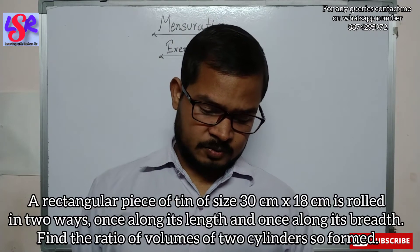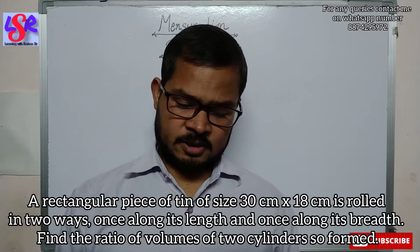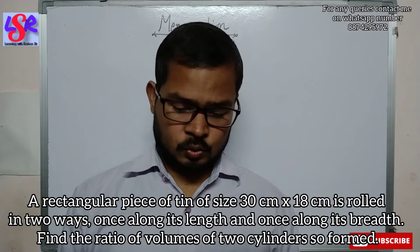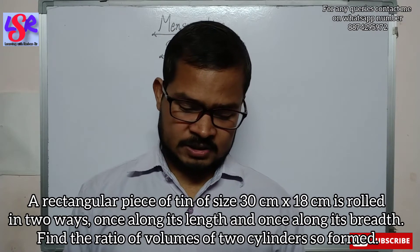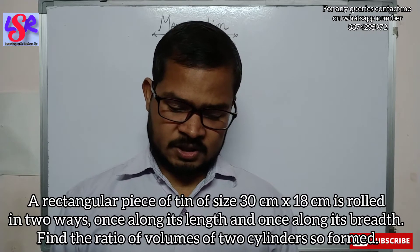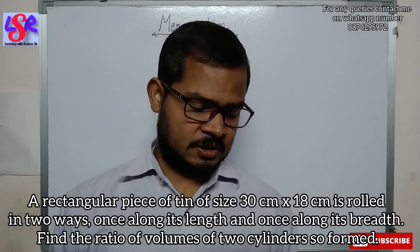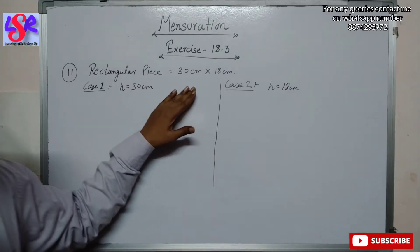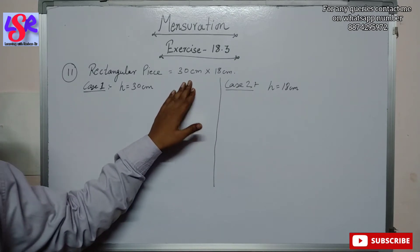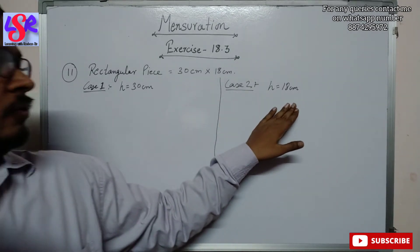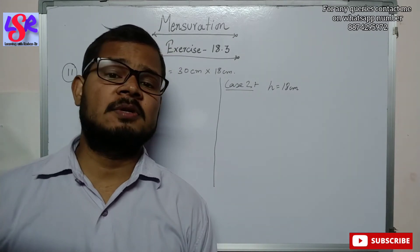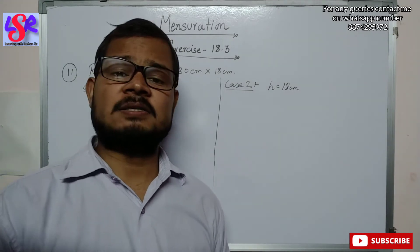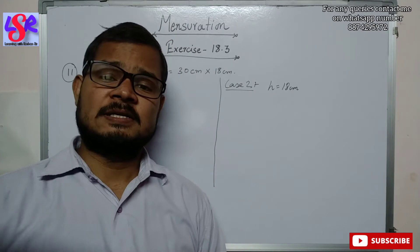In question 11 we have a rectangular piece of tin of size 30 cm by 18 cm, rolled in two ways — once along its length (30 cm) and once along its breadth. The side along which we are rolling becomes the height of the cylinder, and the other side becomes the circumference of that cylinder.